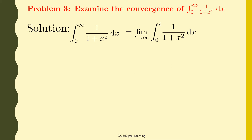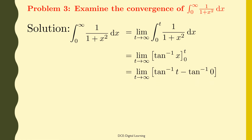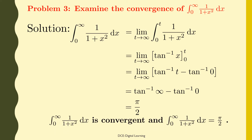On integration, this equals the limit of tan⁻¹(x) from 0 to t as t tends to infinity. Applying the limits, this equals the limit of tan⁻¹(t) minus tan⁻¹(0) as t tends to infinity, which equals tan⁻¹(∞) minus tan⁻¹(0), which equals π/2, since tan⁻¹(0) is 0. Therefore, the given integral of 1/(1 + x²) dx from 0 to infinity is convergent and its value is π/2.